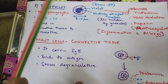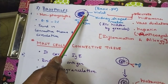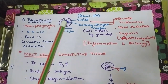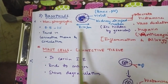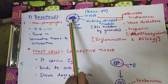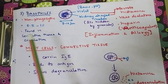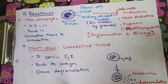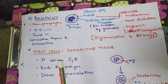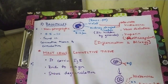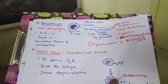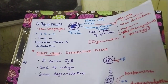To briefly summarize: basophils have violet granules, eosinophils have orange granules, and neutrophils are larger in size. These are the three types of granulocytes, along with mast cells.